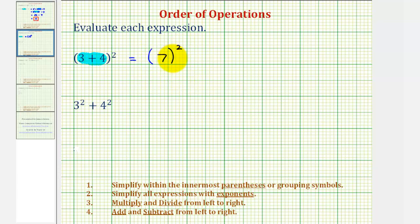And seven squared is equal to seven times seven, which equals forty-nine. So this first expression is equal to forty-nine.